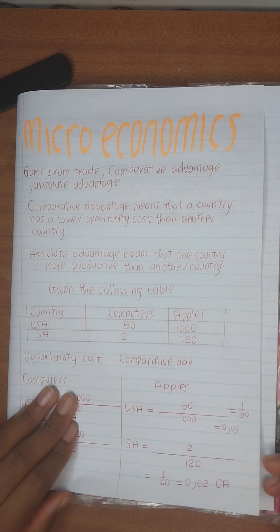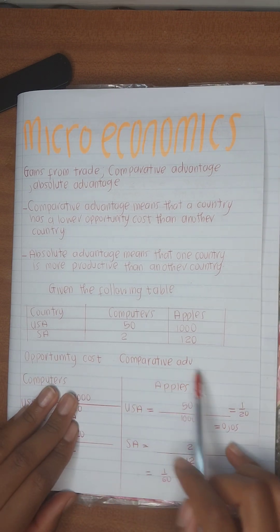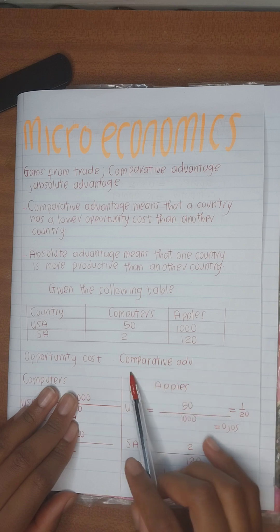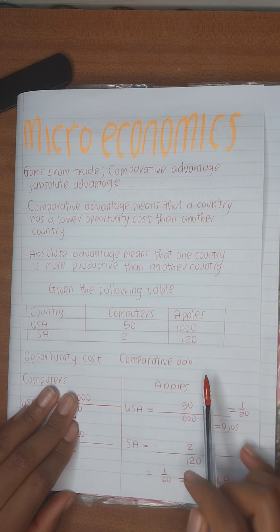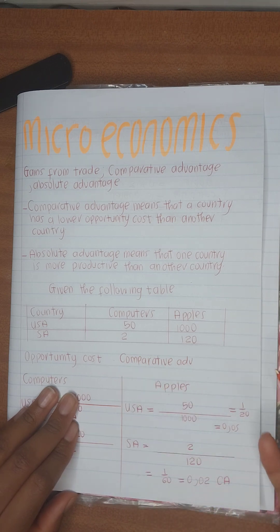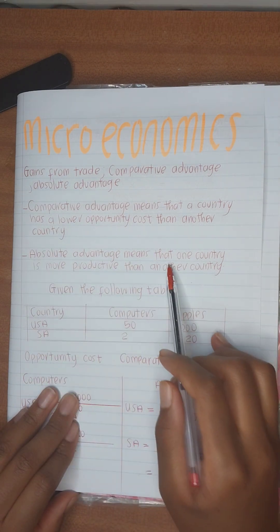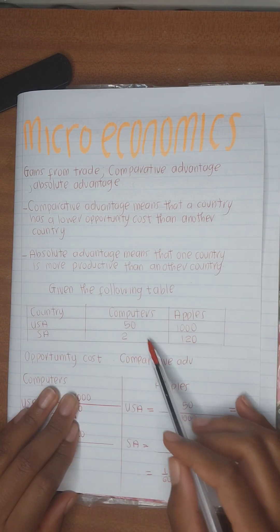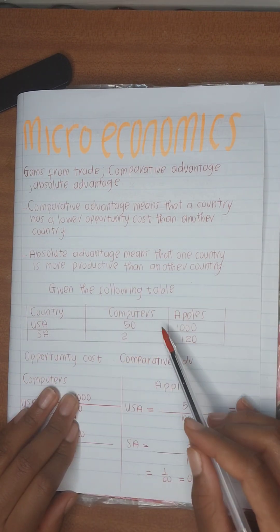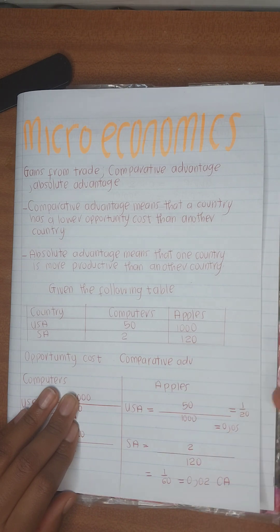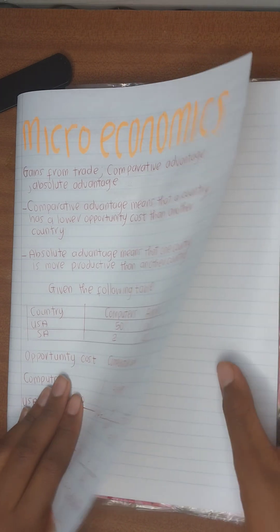That's how you determine which country has a comparative advantage — you always calculate the opportunity cost. For absolute advantage, you just read from the table and see which country has higher values or which country is more productive than the other.